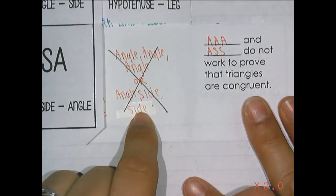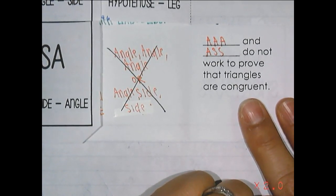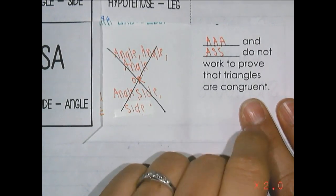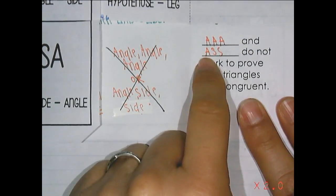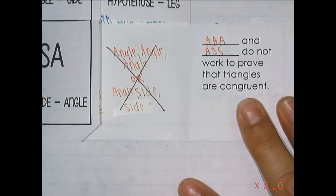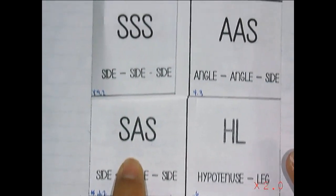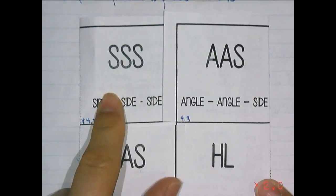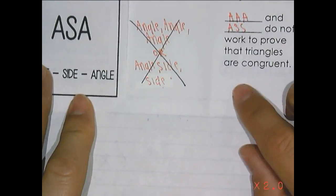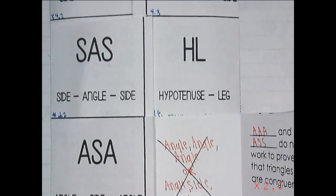And angle, side, side — allow me to be crass for a moment — but there are no asses in geometry. Angle, side, side, or side, side, angle will not also prove your triangles congruent. So AAA and ASS do not work to prove triangles are congruent. Your choices are angle, side, angle; side, hypotenuse leg, which we will get to soon; angle, angle, side; and side, side, side. No AAA and no asses in geometry. Now let's start talking about 4.4.